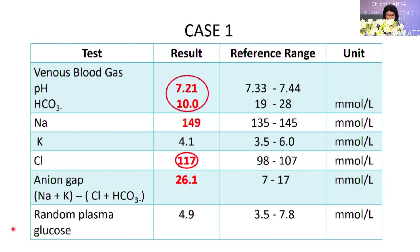What are the unmeasured anions in the body? In renal failure, it's phosphate. In diabetic ketoacidosis, it's ketones. There's also lactate and from poisoning, salicylates. In rare diseases, organic anions are the culprits causing a high anion gap metabolic acidosis.